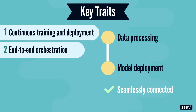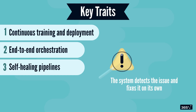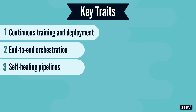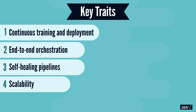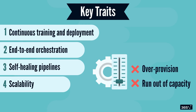Making sure nothing falls through the cracks, a truly advanced system also has self-healing pipelines. If something breaks, the system doesn't just stop — it detects the issue and fixes it on its own. Scalability is another huge advantage: resources adjust dynamically based on workload demand, so you're never over-provisioning or running out of capacity.